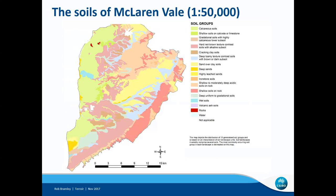They identified 15,000 soil landscape units, 61 subgroup soils — which most people would call soil types — and 15 soil groups. In this slide we see the soil groups identifiable in the McLaren Vale GI, which is 431 square kilometres. You might notice that 13 out of the 15 soil groups identified in the entire state occur in the McLaren Vale GI. So straight off the top, we can say that soil variation in McLaren Vale is fairly substantial.